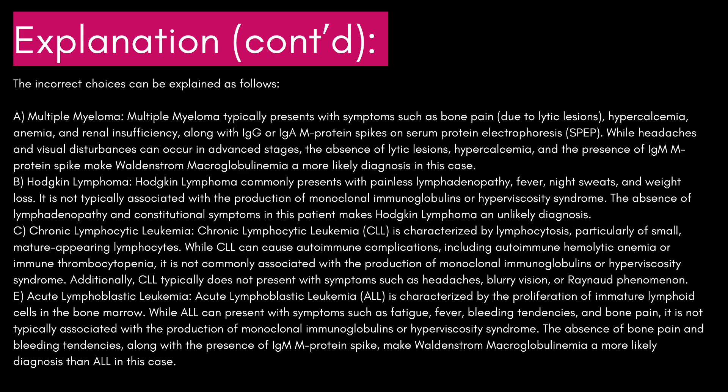C, chronic lymphocytic leukemia, CLL, is characterized by lymphocytosis, particularly of small, mature-appearing lymphocytes. While CLL can cause autoimmune complications including autoimmune hemolytic anemia or immune thrombocytopenia, it is not commonly associated with the production of monoclonal immunoglobulins or hyperviscosity syndrome. Additionally, CLL typically does not present with symptoms such as headaches, blurry vision, or Raynaud phenomenon.